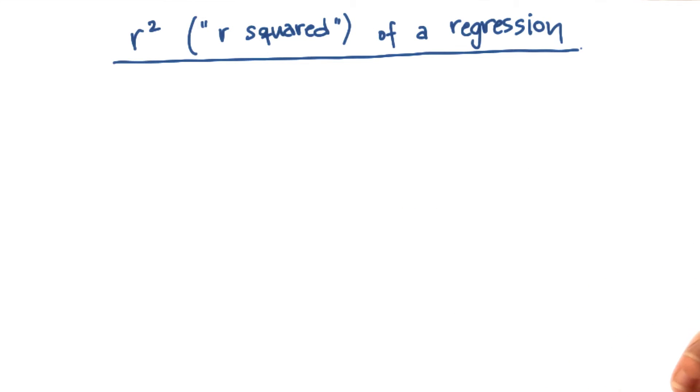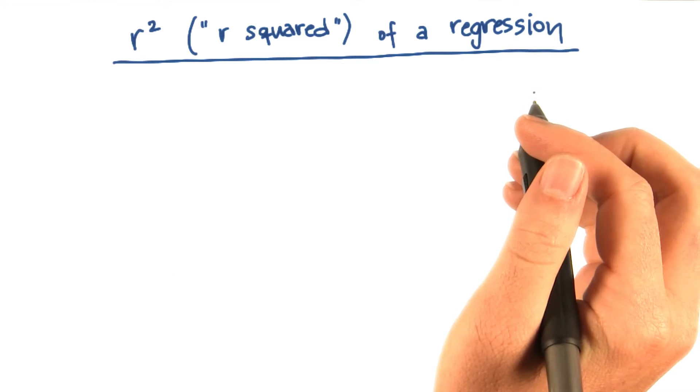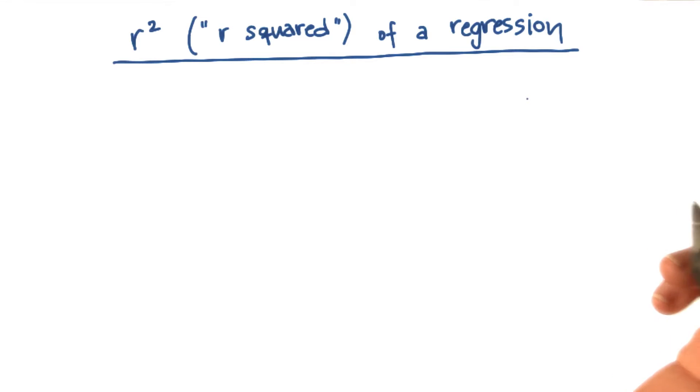An evaluation metric that doesn't have this shortcoming is called r-squared. It's a very popular evaluation metric for describing the goodness of fit of a linear regression.